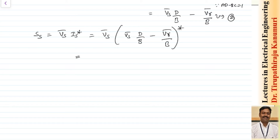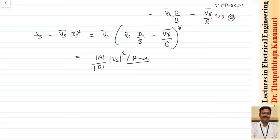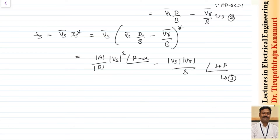Since D = A for a transmission line, the first term becomes (A/B)·Vs² at an angle of beta minus alpha, because when taking the conjugate the Vs angle delta cancels, leaving beta from the denominator and alpha from A in the numerator. The second term is −Vs·Vr/B at an angle of delta plus beta. This is equation number 3.